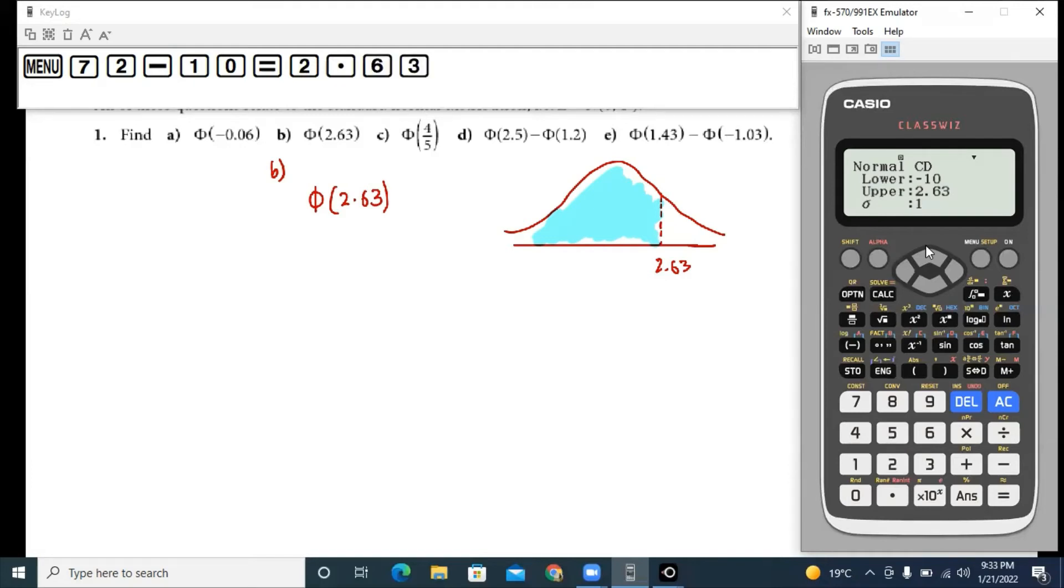So I enter 2.63. Now since the standardized normal distribution always has standard deviation sigma equals 1 and mu equals zero, I press enter and I get my probability.